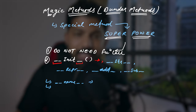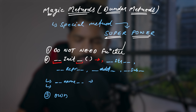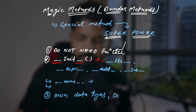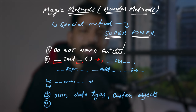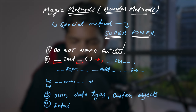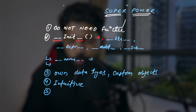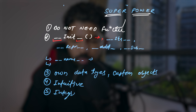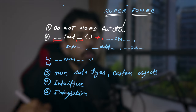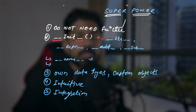With the help of magic methods you can create your own data types and custom objects. They define the behavior of your custom objects and make your class more intuitive, readable, and comprehensive. You can also use these magic methods to integrate your custom objects with Python seamlessly. Now let's write a program using magic methods to perform operations like addition and subtraction between two trades.